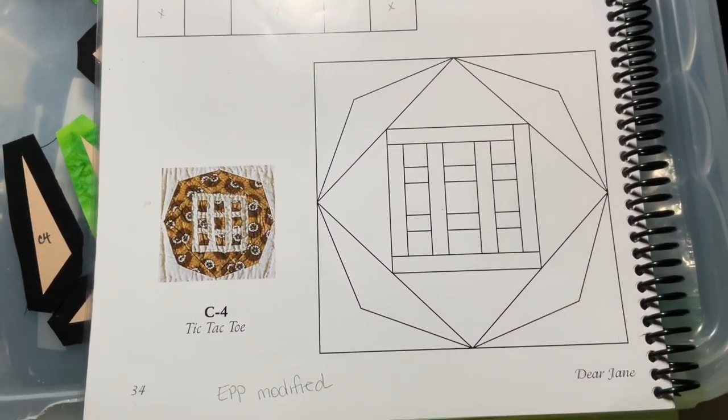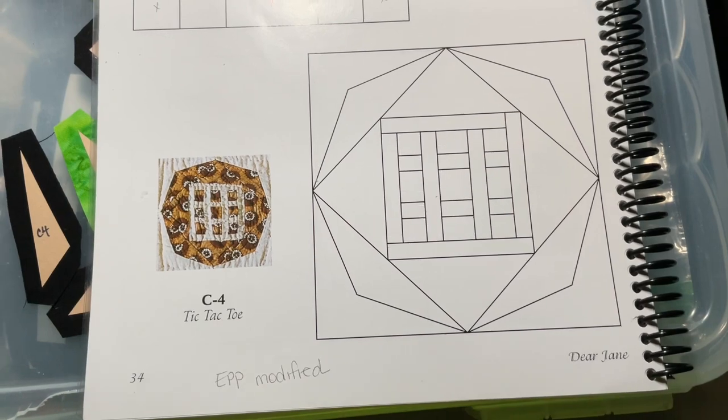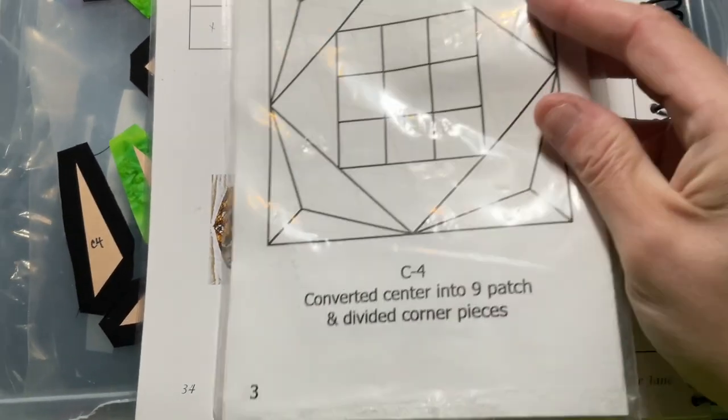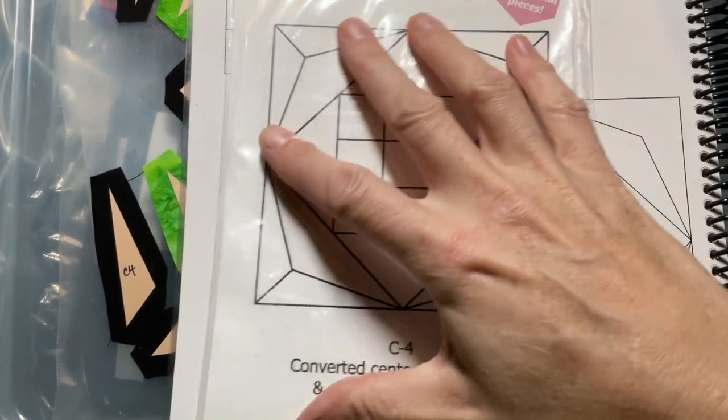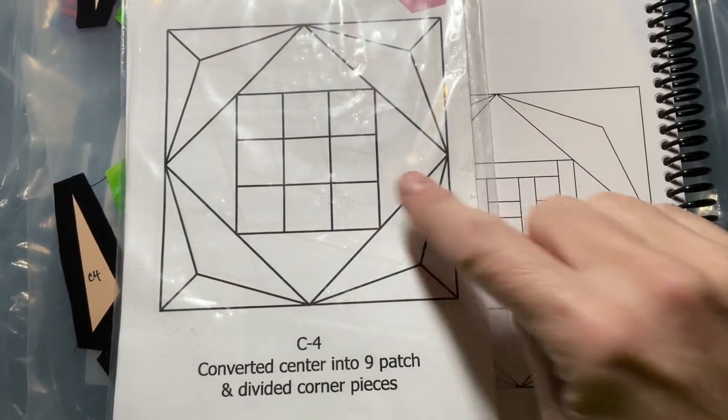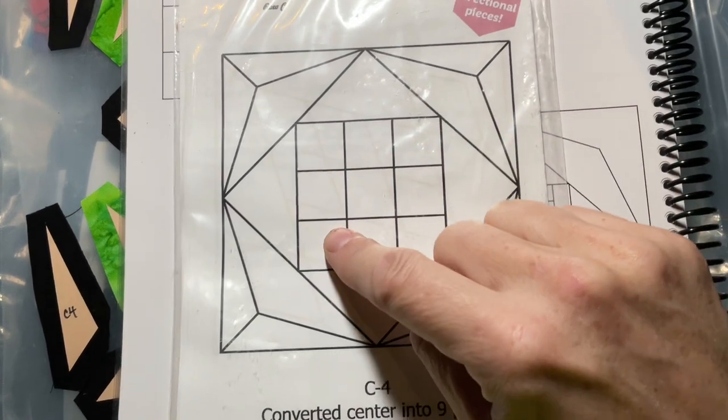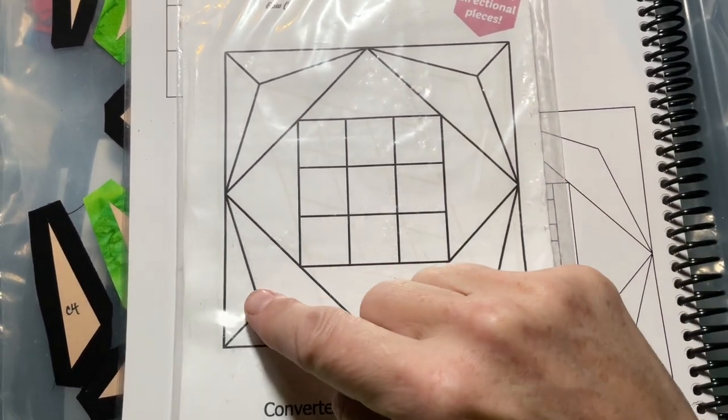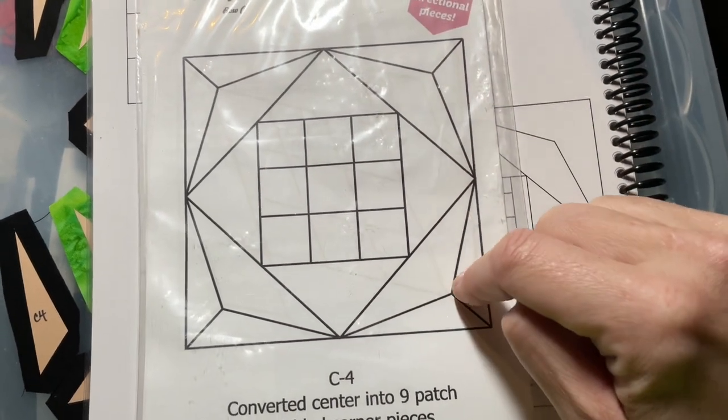Now we're on C4. C4 is a modified block, which means we're going to use the diagram in the pamphlet included with the kit. The center's been changed a bit, so I have a nine-patch square in the center, then triangles around the outside, and then this three-piece corner going on.